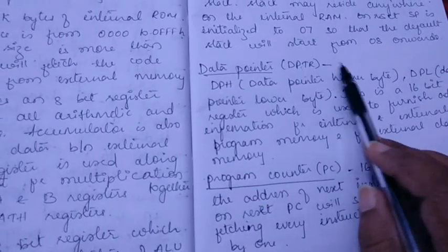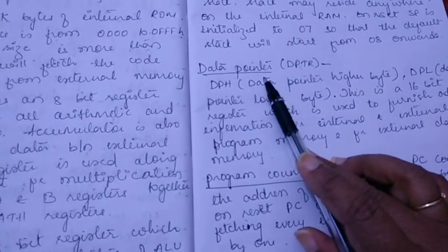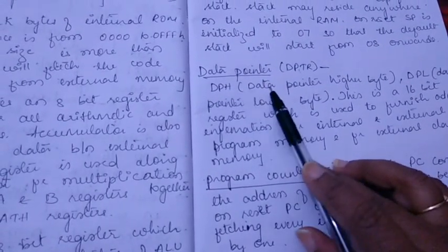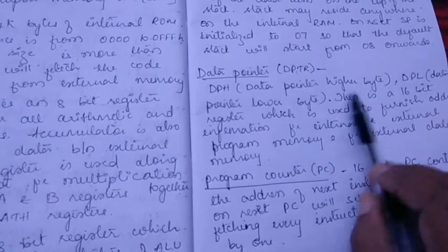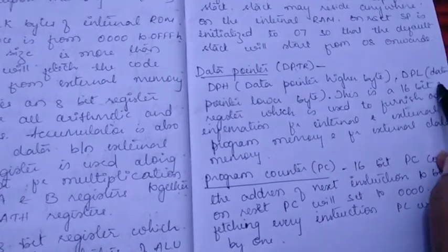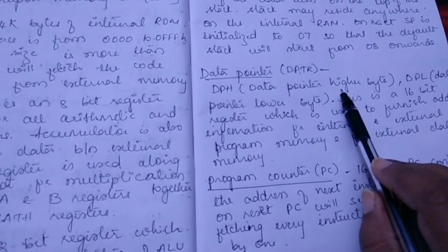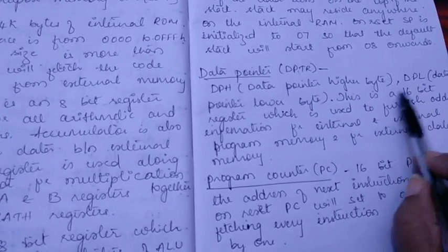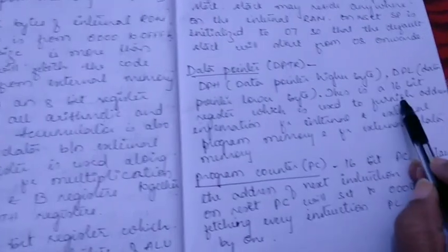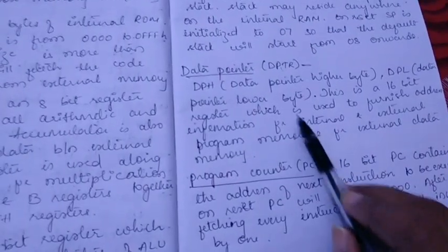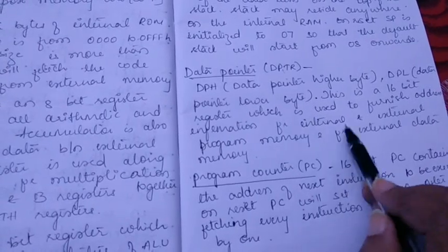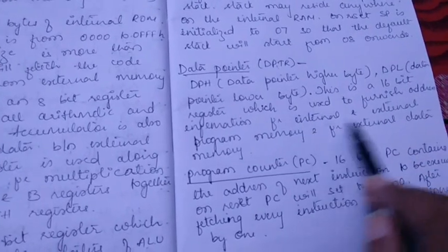Next is data pointer DPTR. We have two kinds: DPH which is called data pointer higher byte and another one is DPL which we call data pointer lower byte. This is a 16-bit register, 8-bit for higher, 8-bit for lower, which is used to furnish address information for internal and external program memory or for external data memory.